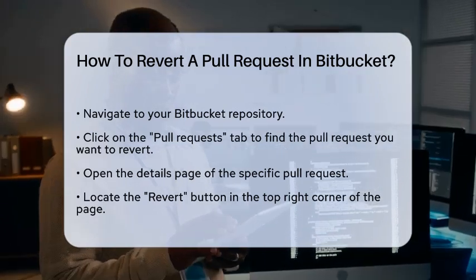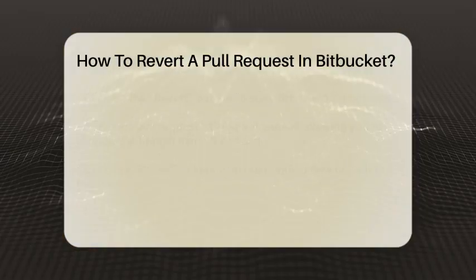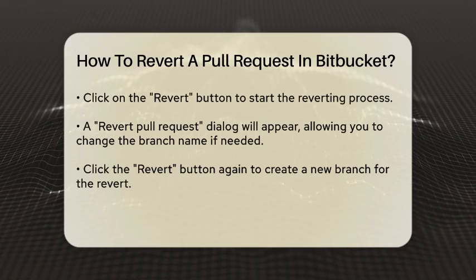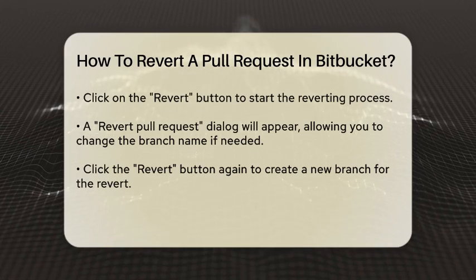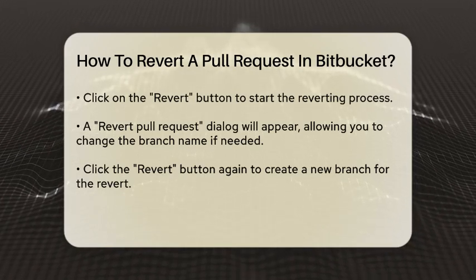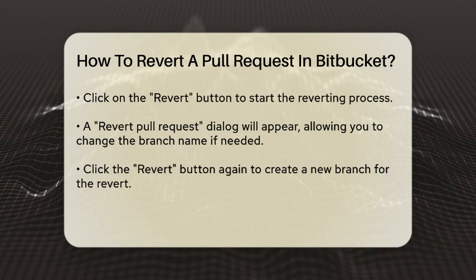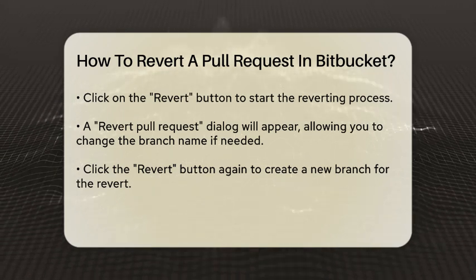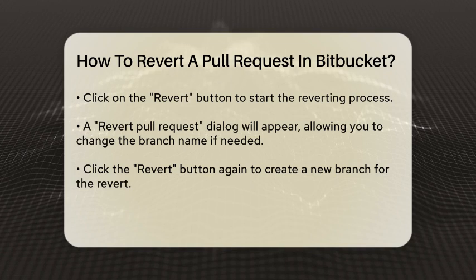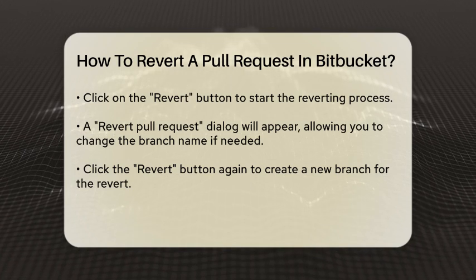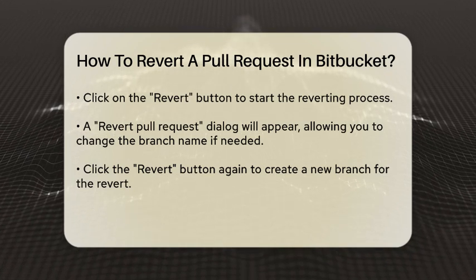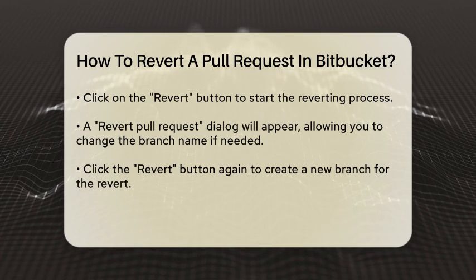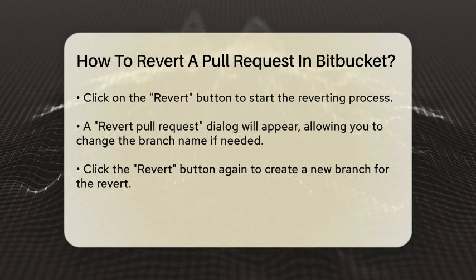On this page, look for the Revert button located in the top right corner. Clicking this button will initiate the process of reverting the pull request. You will be presented with a Revert Pull Request dialog where you can optionally change the branch name for the new branch that will be created to revert the changes. After configuring any options you need, click the Revert button again.